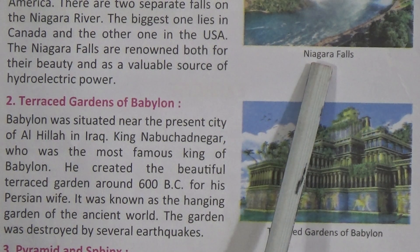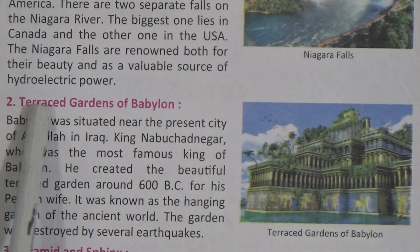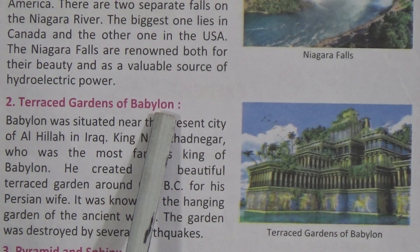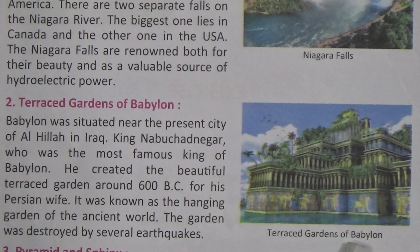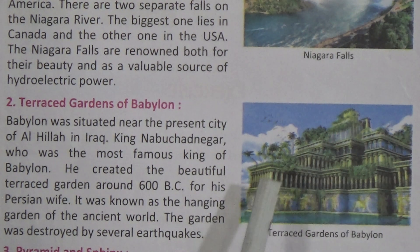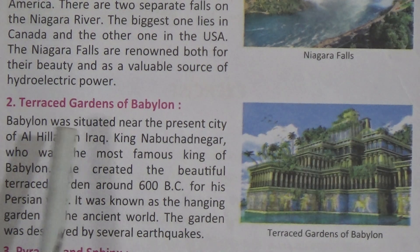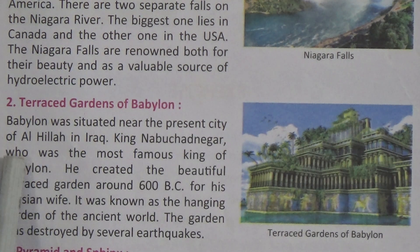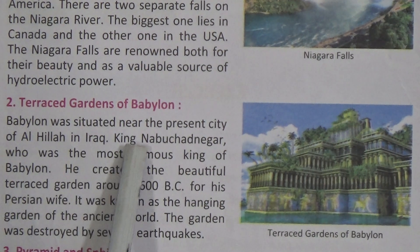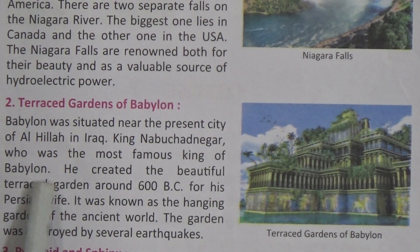The second place is the Hanging Gardens of Babylon. Look at the picture — you can see a garden on an old building. Babylon was situated near the present city of Al-Hillah in Iraq. King Nebuchadnezzar, who was the most famous king of Babylon, created this beautiful hanging garden.